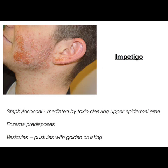The next condition often confused is impetigo, which involves staphylococcal toxins — not direct staphylococcal infection — that cleave the upper epidermal area and lead to the classical appearance described as golden crusting. You get vesicles, pustules, and then this golden crust. You'll often see impetigo in patients who have eczema and therefore have pre-existing sites for staphylococcal infection to take hold.